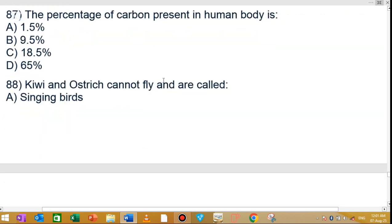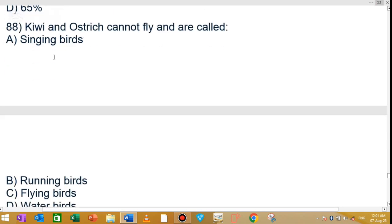Question number 88: The percentage of carbon present in the human body is 18.5 percent. Question number 88 or 89: Kiwi and ostrich cannot fly. These are flightless birds.